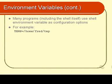Every program is going to have its own particular set of environment variables that it looks at to determine the current configuration. Those environment variables can usually be found at the end of every man page. So, for example, with a program called vi, if you wanted to find out all the environment variables that vi uses, you could look in the vi manual page, usually right at the end.